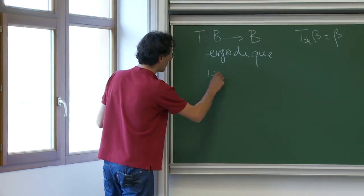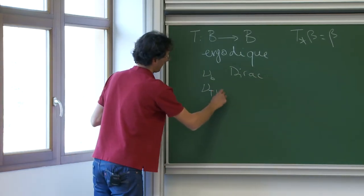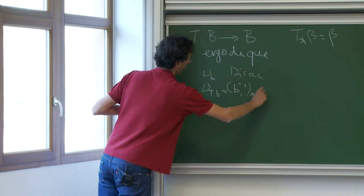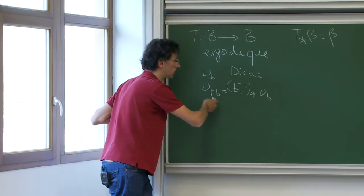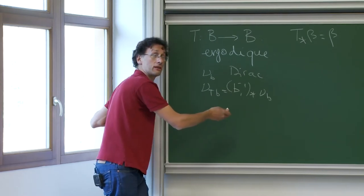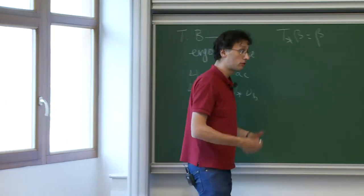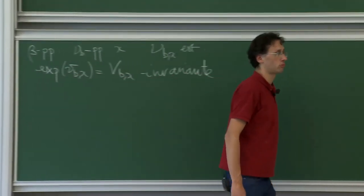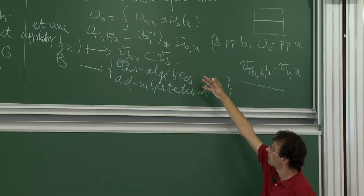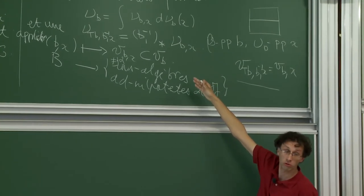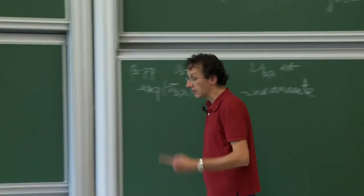In particular, every property of the ν_B that is invariant under the equivariance relation is either true almost everywhere or true nowhere — either on a set of measure 1 or measure 0. I used this last time very quickly. When I studied the case where ν_B was a Dirac mass: since ν_{TB} = B₁⁻¹(ν_B) and the map B ↦ ν_B is measurable, the set of B such that ν_B is a Dirac mass is shift-invariant, hence measure 0 or 1.